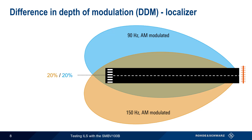As we move to the right of the centerline, the AM modulation depth of the 150 hertz lobe increases, and the AM modulation depth of the 90 hertz lobe decreases. For example, at this point, the modulation depth of the 150 hertz lobe has increased to 30%, and the depth of the 90 hertz lobe has decreased to 10%.